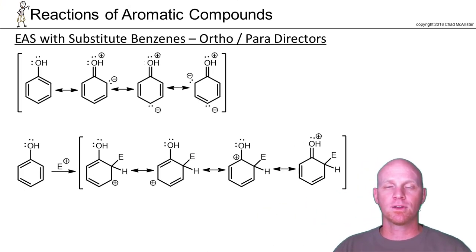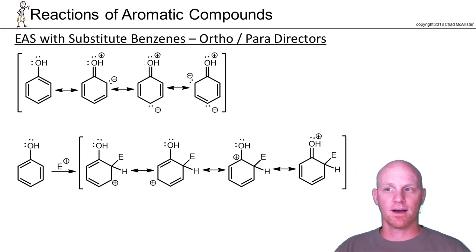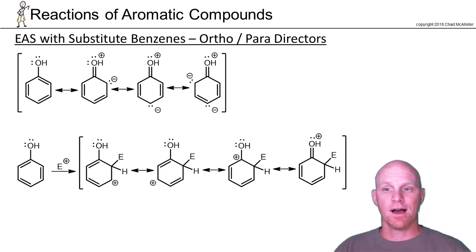Now we want to take a closer look at the ortho-para directors. All your electron donating groups are ortho-para directors, and then the halogens, even though they're electron withdrawing, are also ortho-para directors. Let's take a look at why they're ortho-para directors.